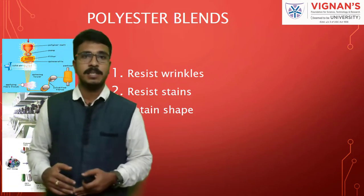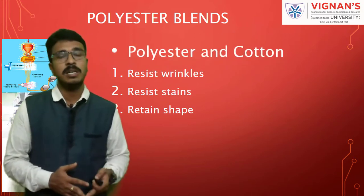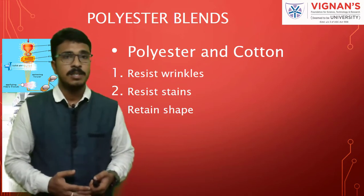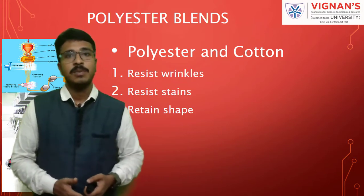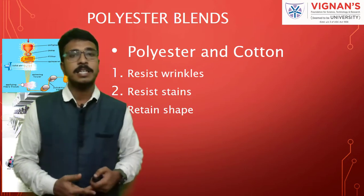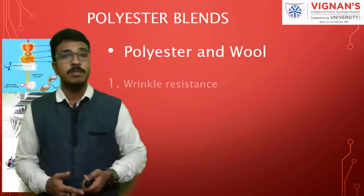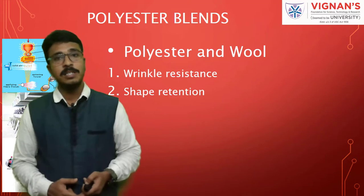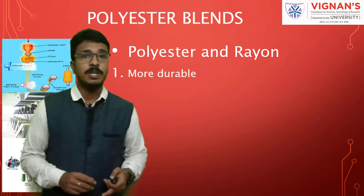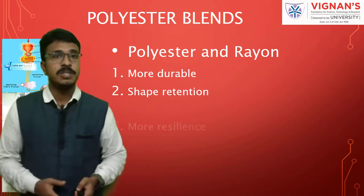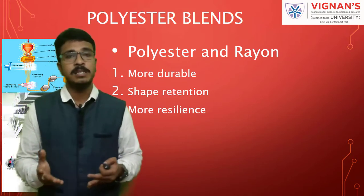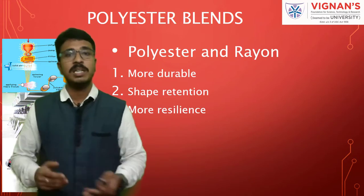When it comes to polyester blends: blending polyester and cotton gives wrinkle resistance, stain resistance, and shape retention — which is why polyester-cotton blended shirts are widely used. Polyester and wool blends offer wrinkle resistance, shape retention, and increased durability. Polyester and rayon blends result in more durability, shape retention, and more resiliency.